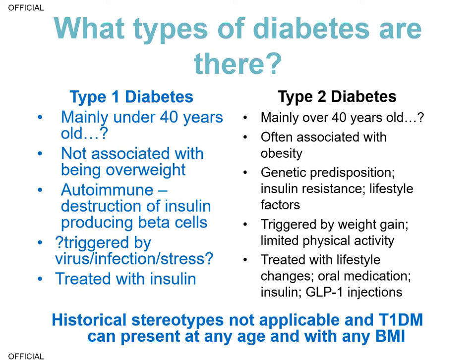Type 2 diabetes mainly presents as you get older; however, with the increase in obesity we're seeing more and more young people present with type 2 diabetes. In 90% of cases, type 2 diabetes is linked with being overweight or obese, though there is some genetic predisposition in specific ethnic groups. It's characterized by resistance to insulin, and lifestyle factors play a major component — weight gain and limited physical activity can be contributory risk factors. There is recent evidence that with weight loss due to lifestyle intervention, type 2 diabetes can be put into remission; however, the vast majority of patients need either oral medication, injections with drugs called GLP-1s, or indeed insulin.